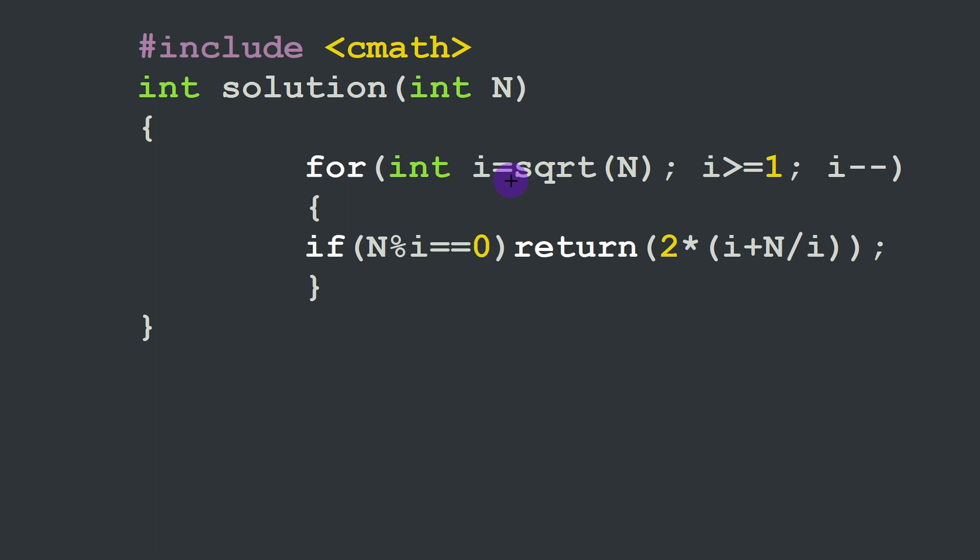We are starting from the closest case to our minimal perimeter, and if it works, the first dimensions where we have good divisions among integers, this is our solution. We don't have to test further and therefore we can return twice i plus N over i, meaning the first side A and N over i is B, as we have explained in the algorithm section.